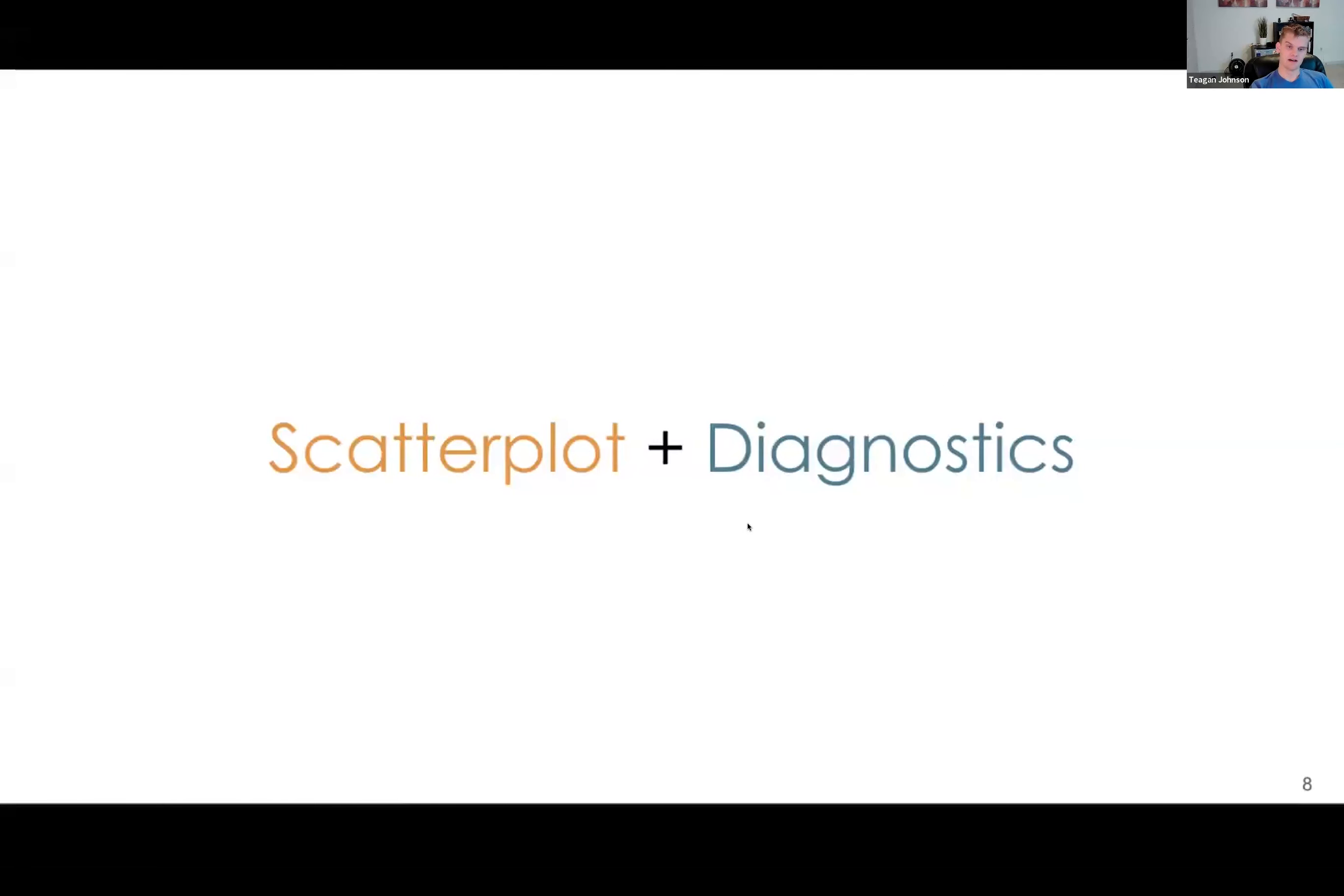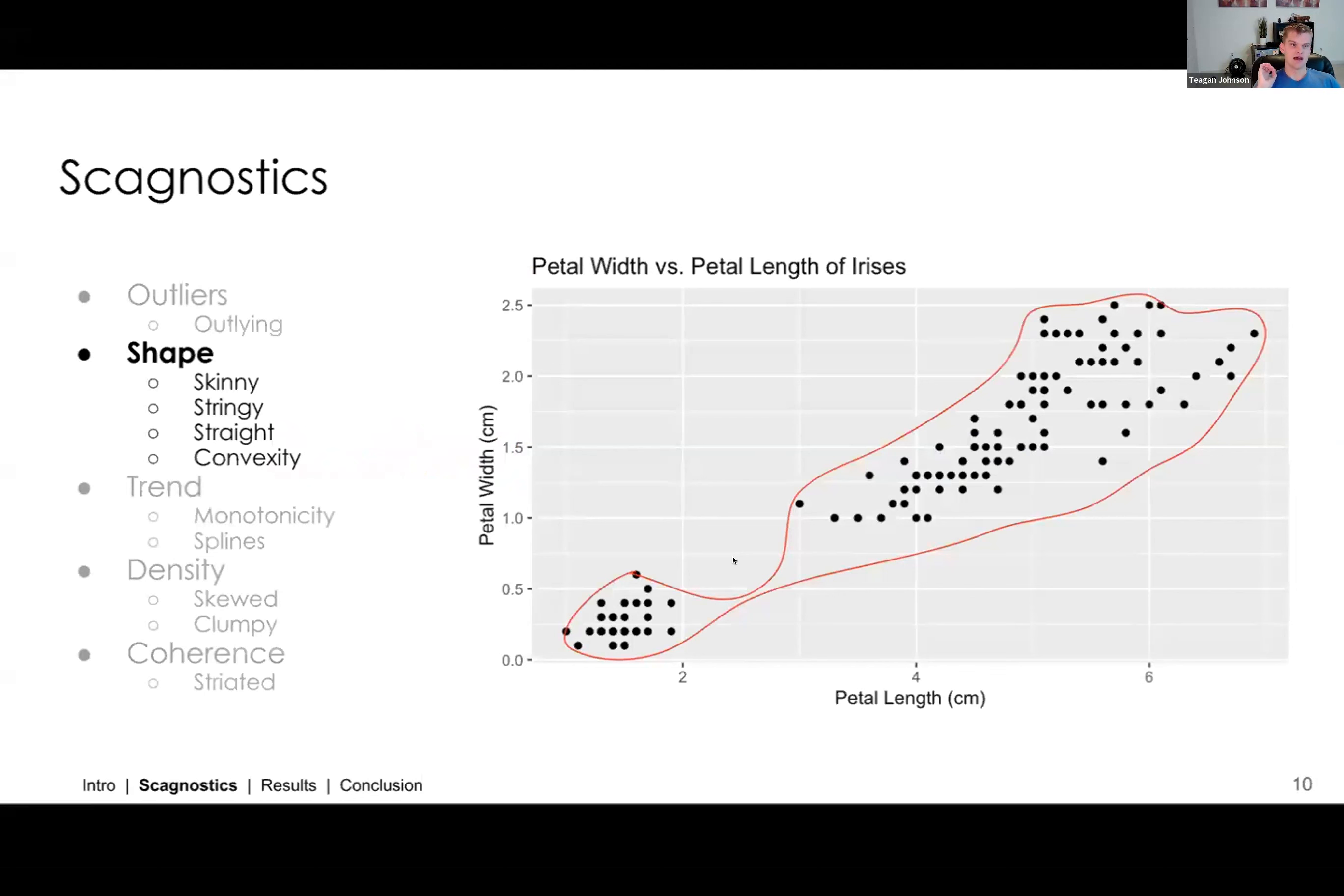Yeah, thank you, Sam. So we did some prior literature review, and we found that in 2005, there was a paper that introduced this idea of scagnostics, which are basically scatterplot diagnostics. And so I'm going to walk through a little bit about what scagnostics are and how we use them in our own research. As you can see on the left side, there's a list of five different categories of scagnostics, which all aim to measure different parts of statistical graphics.